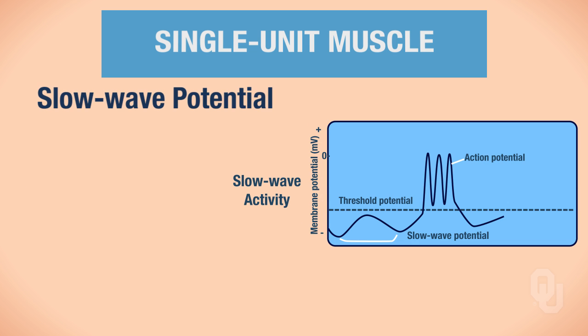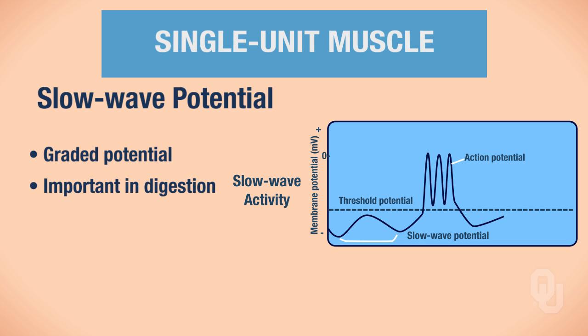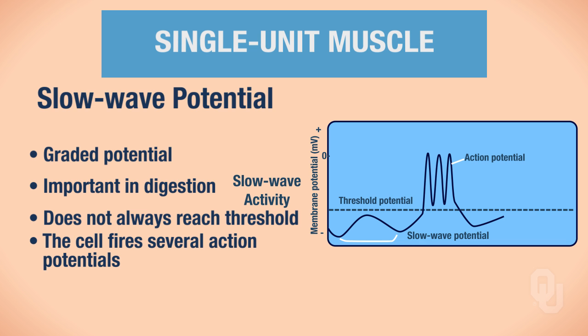Now let's look at a slow wave potential. These are also types of graded potentials and are important in the gut for digestion. In a slow wave potential, does the cell always reach threshold? No. When the cell does reach threshold, it fires several action potentials — not just one. The cell is only at rest momentarily, and if it doesn't reach threshold, which often happens, no action potential occurs. This is very different from a pacemaker potential. We will return to pacemaker potentials when we study the heart, and slow wave potentials when we study the regulation of digestion.